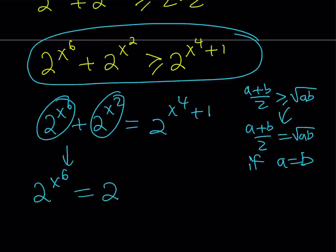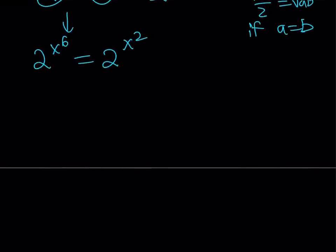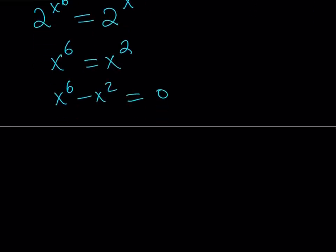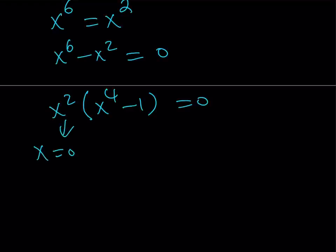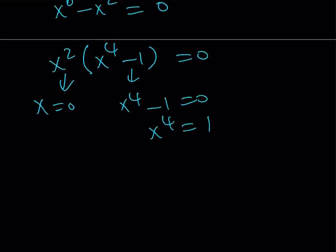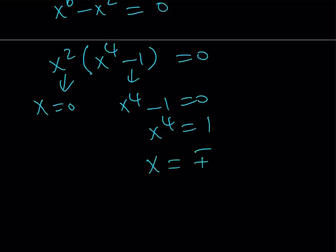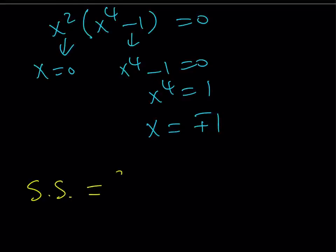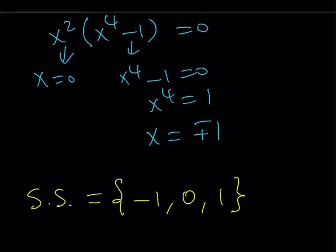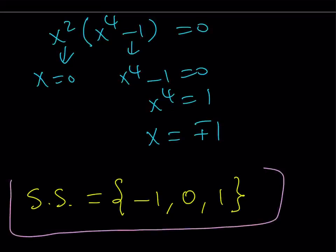So the result is: 2 to the x to the sixth equals 2 to the x squared. When two powers with the same base are equal, their exponents must be equal, so x to the sixth equals x squared. Don't just divide by x squared — put everything on the same side and factor: x squared times (x to the fourth minus 1) equals zero. Setting each factor to zero: from x squared equals zero we get x equals zero; from x to the fourth minus 1 equals zero we get x to the fourth equals one, giving x equals plus or minus one. So our solution set is {-1, 0, 1} — the solutions we found at the beginning were the only solutions, and there are no others.